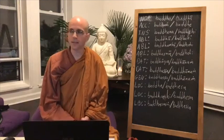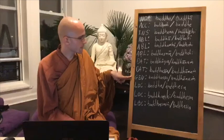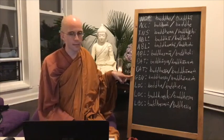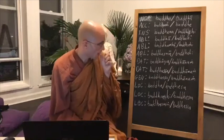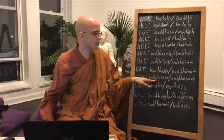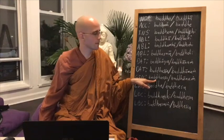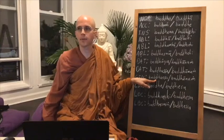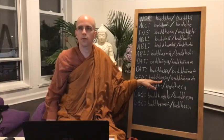Genitive primarily indicates ownership, and can also indicate origin. For example, 'Buddhassa savako' means 'the disciple of the Buddha' or 'the Buddha's disciple' — the disciple belonging to the Buddha. Genitive indicates 'of' or 'belonging to.' It can also indicate origin, like sandalwood from Benares. Apparently in the time of the Buddha, Varanasi had all the best goods.